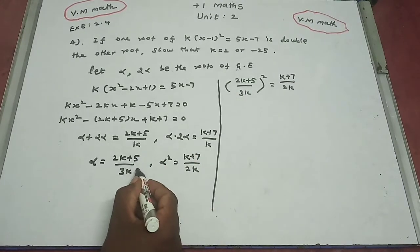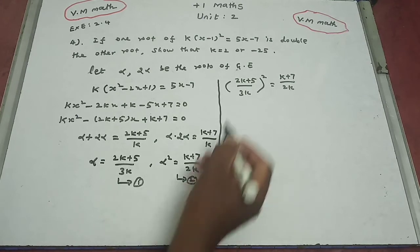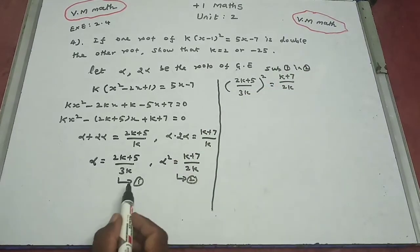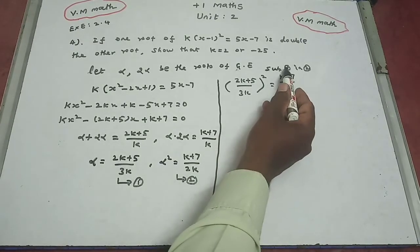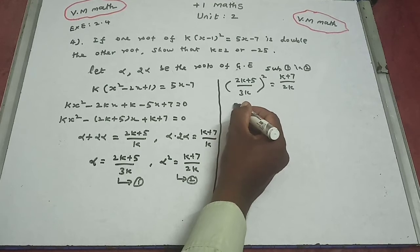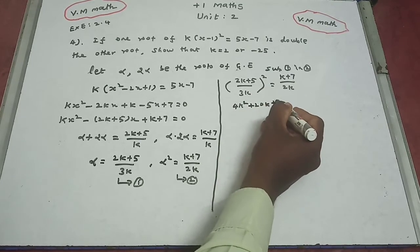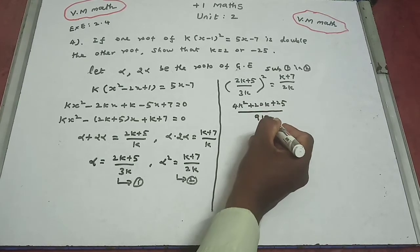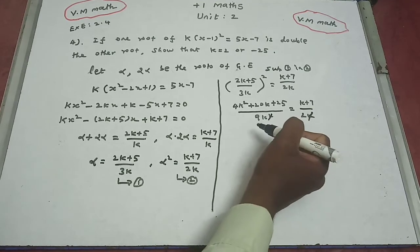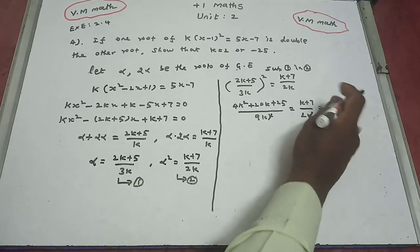Substituting: [(2k + 5) / (3k)]² = (k + 7) / (2k). Expanding the left side using (a + b)² gives (4k² + 20k + 25) / (9k²) = (k + 7) / (2k). Cross-multiplying and simplifying, k² cancels.